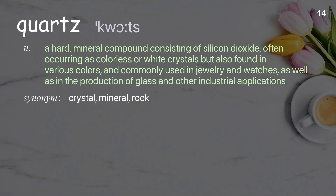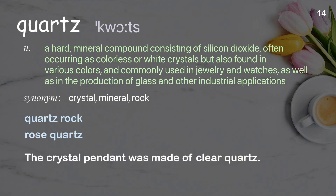Quartz. A hard mineral compound consisting of silicon dioxide, often occurring as colorless or white crystals, but also found in various colors and commonly used in jewelry and watches, as well as in the production of glass and other industrial applications. Examples: Quartz rock. Rose quartz. The crystal pendant was made of clear quartz.